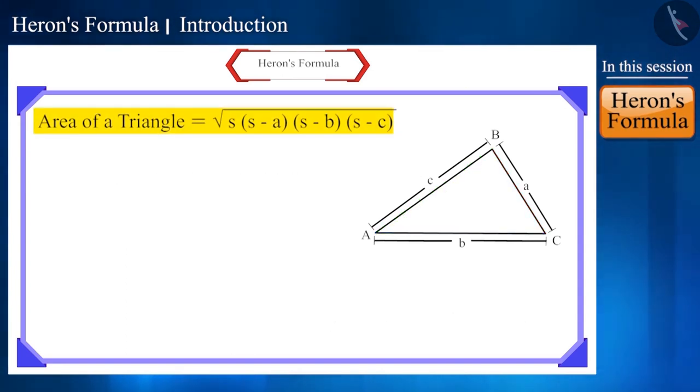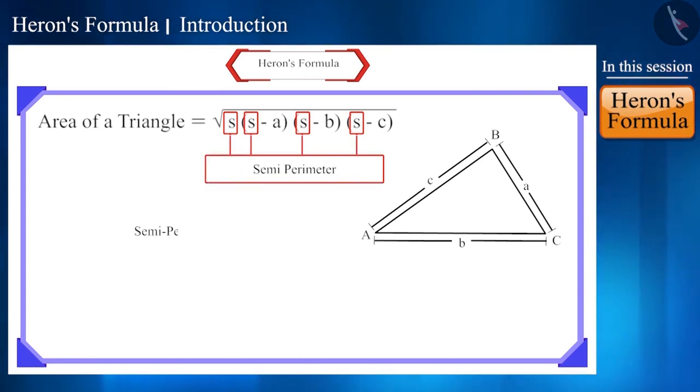Let's try to understand the given terms in Heron's formula. In this formula, s represents the semi-perimeter of the given triangle whose value is obtained by dividing the perimeter of the triangle by 2.